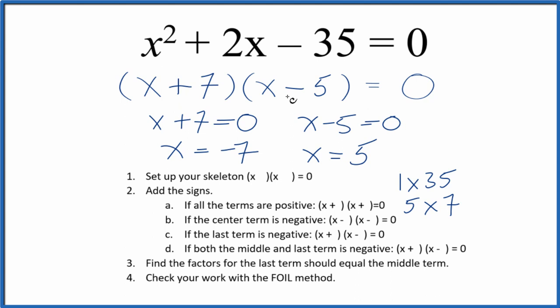That means if we put 5 in for x here, and we do the math, this whole side will equal 0. Likewise, if we put negative 7 in for x, and we do the math, it'll equal 0. So we've done this part here correctly.